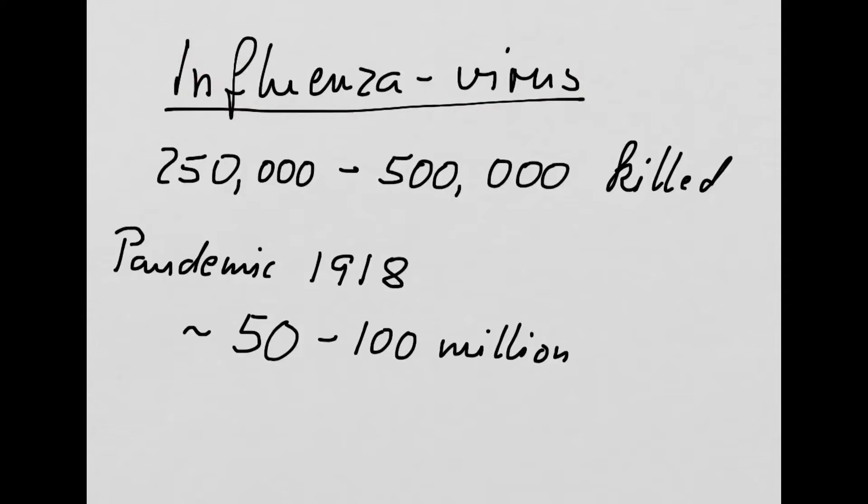And believe it or not, but every year worldwide this virus kills around between 250,000 and 500,000 people. That's half a million people who are killed by that. But that is nothing compared to this gigantic pandemic in 1918, shortly after World War One, where there was an outbreak of influenza virus and worldwide, we will never know the exact number, but it is estimated that between 50 and 100 million people were killed by this virus. This is an incredible number.